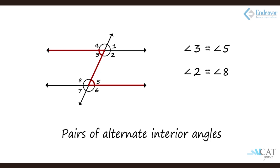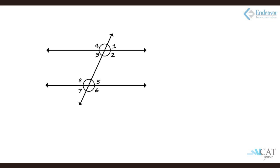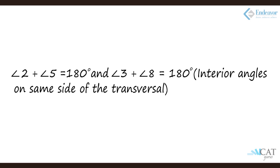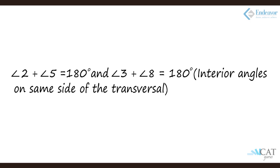Interior angles are those lying between the two parallel lines — angles 2, 3, 5, and 8. Interior angles on the same side of the transversal, like angles 2 and 5, add up to 180 degrees. Similarly for angles 3 and 8. Angles 2 and 5 form a C-shape, and 3 and 8 form the reverse C — both pairs add up to 180 degrees. This holds only when a transversal intersects two parallel lines; if the lines are not parallel, this does not hold true.